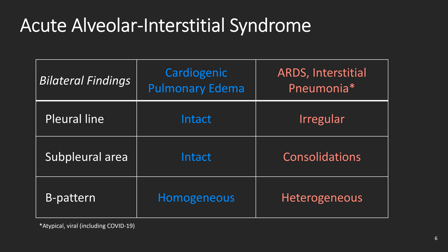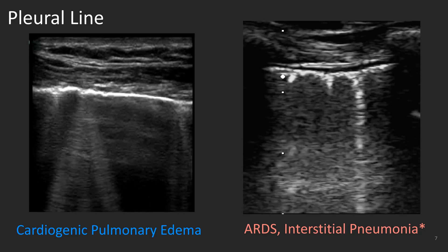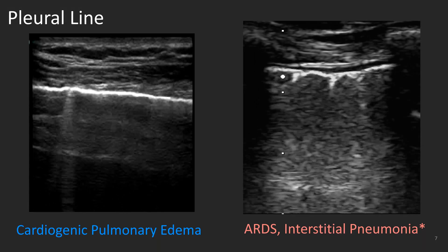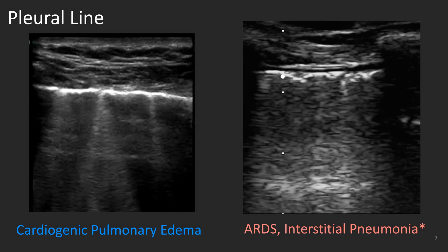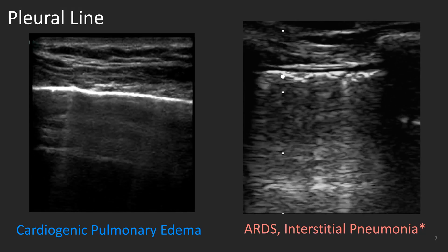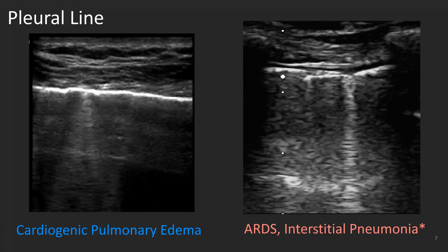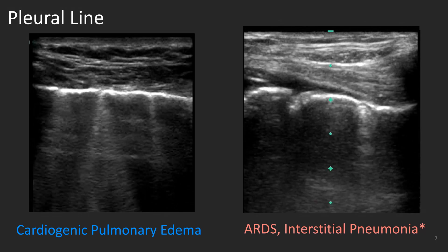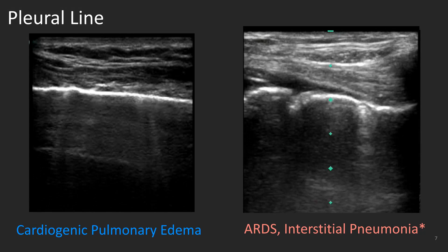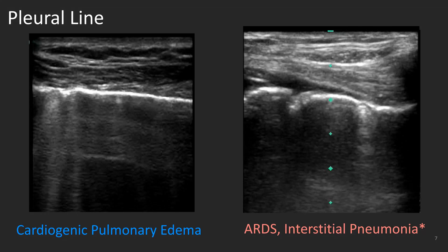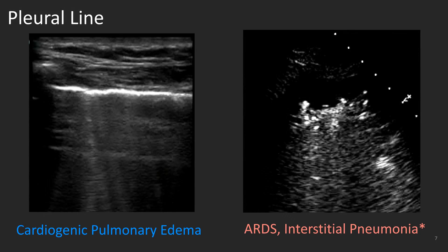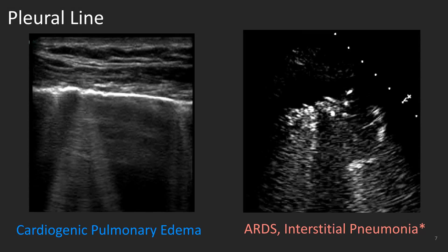Let's start with the pleural line. Here we see 2D images with a linear probe. On the left we can see a nice intact pleural line, while on the right the pleural line looks irregular and ugly — it is not a nice horizontal line anymore. Another example of an irregular pleural line is shown here; this one looks ragged and not very linear. The last one is even worse, where the pleural line is completely disrupted — choppy and irregular.